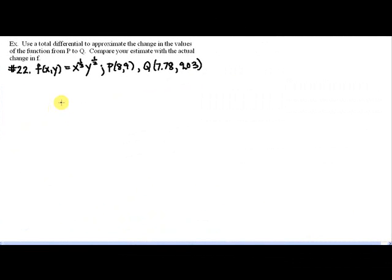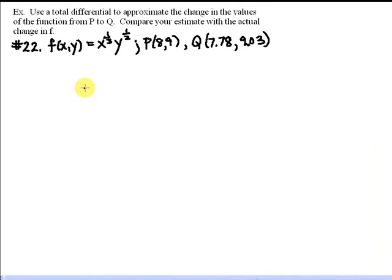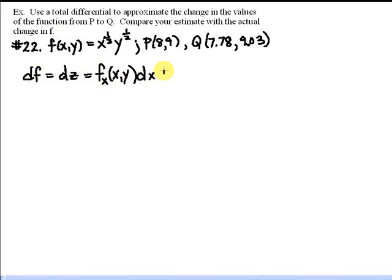Now let's use the total differential for what it actually is: an estimate of the change in the function's value. This is number 22 in section 14.4. The instructions say to use a total differential to approximate the change in the values of f from point p to point q, then compare the estimate with the actual change in f. We need to find df, which equals the partial of f with respect to x times dx plus the partial of f with respect to y times dy.